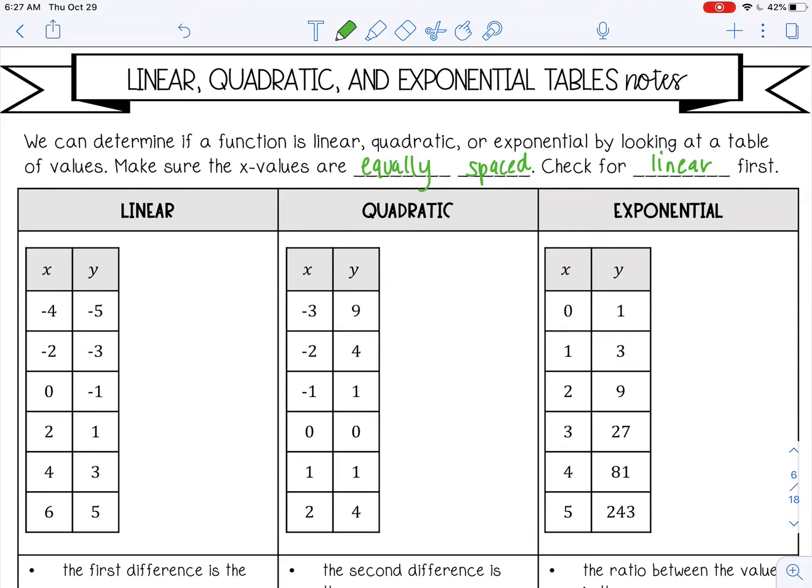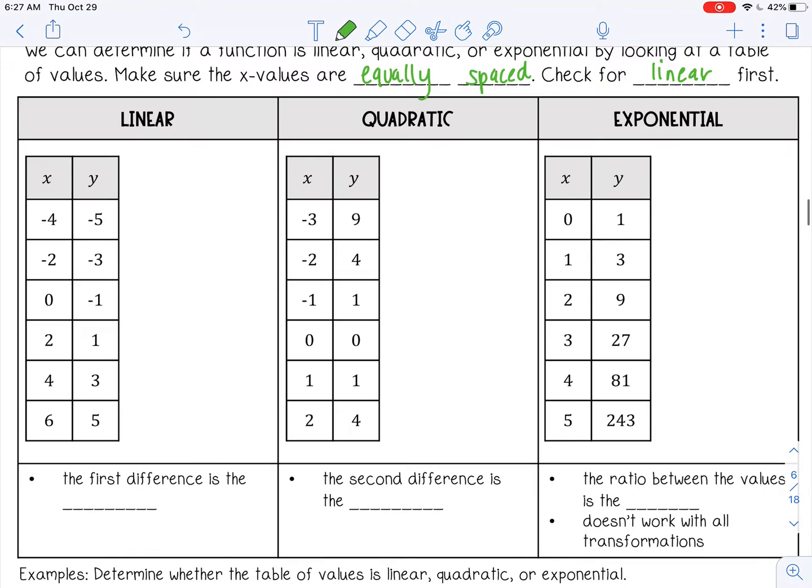So let's talk about linear. First of all, let's check to make sure those x values are equally spaced. So negative 4, negative 2, 0, 2, 4, 6—they all are two apart, so we're good on that.